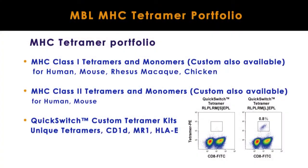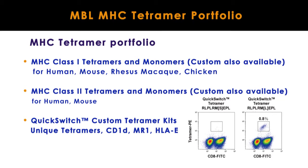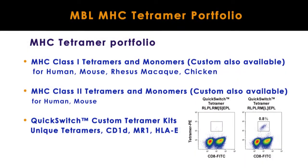MBL MHC Tetramer Portfolio. MBL offers MHC class I and class II tetramers and monomers with a wide variety of antigens and fluorochromes. You can use MBL's monomers to make your own MHC tetramer conjugated with your favorite fluorochrome.